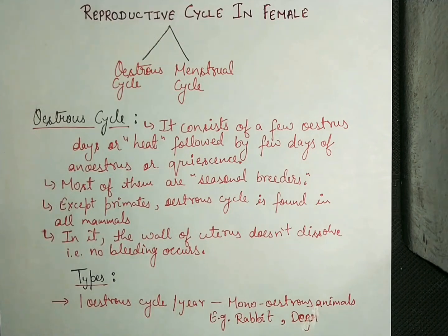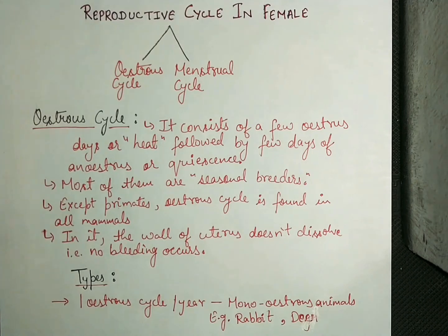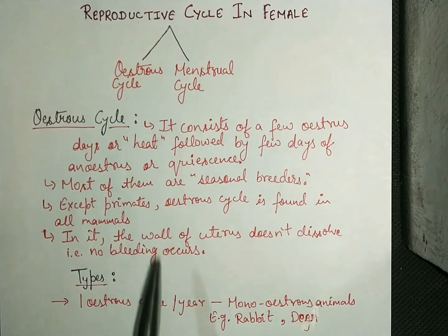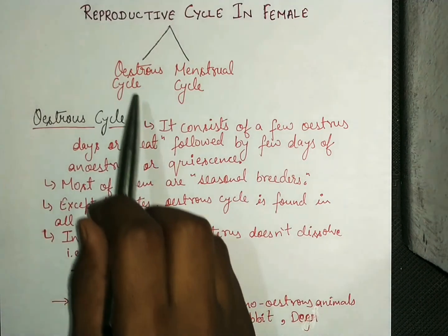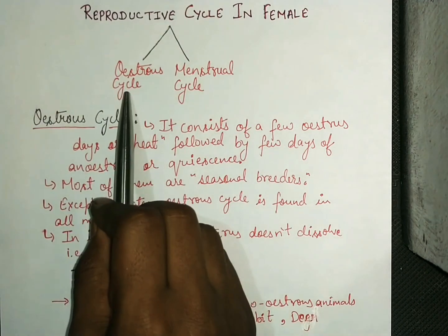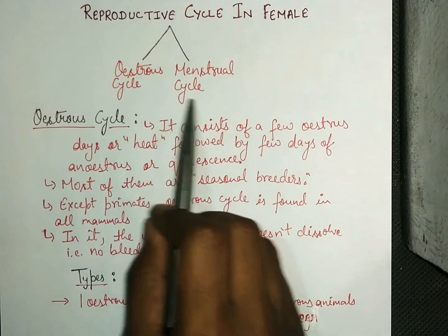Hello everyone, this is Shatrugan and in this lecture we will discuss about the reproductive cycles in female. The reproductive cycles are of two types: estrus cycle and menstrual cycle.